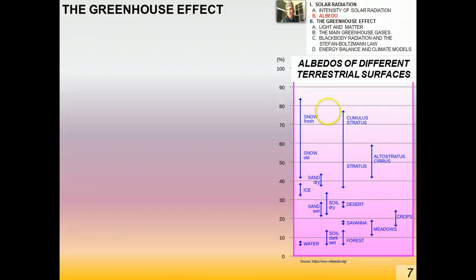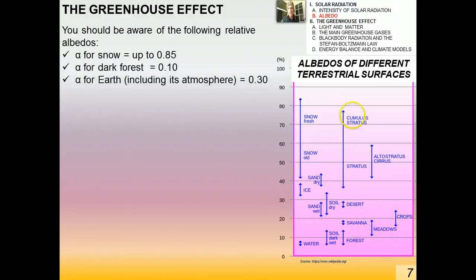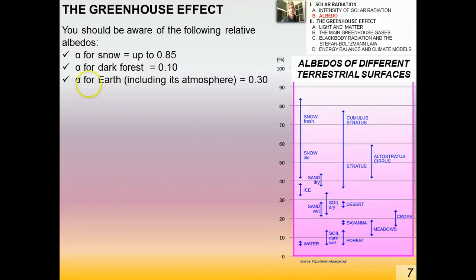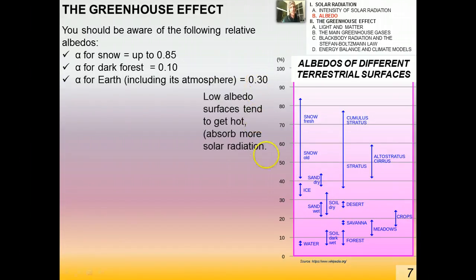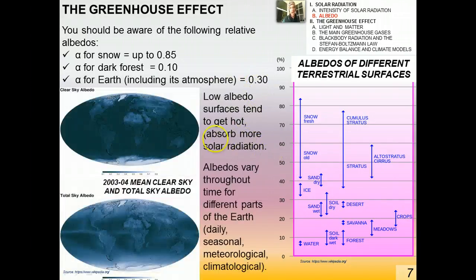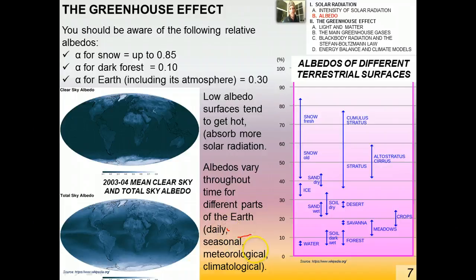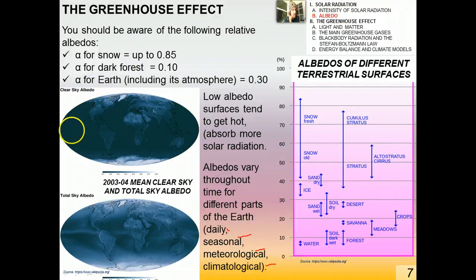Here are the albedos of different terrestrial surfaces: snow and clouds have relatively high albedos, while water, forests, meadows, crops, and soil tend to be quite low. Different types of clouds also have different albedos. Key values to remember: snow albedo can be up to 0.85; dark forest is around 10% (0.10); and Earth overall, including its atmosphere, has an albedo of about 0.30 (30%). Low-albedo surfaces tend to get hot because they absorb so much solar radiation. Albedo also varies on daily, seasonal, and long-term climatological timescales.